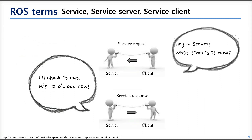Another type of communication uses the service message. Service is duplex communication but it works only once. It has two sides: the server side and the client side. The server waits for a request from the client, and when the client sends a request, the server sends back a response. Then the client stops running. This communication is used for triggering a process or for a one-time exchange like getting camera calibration data.